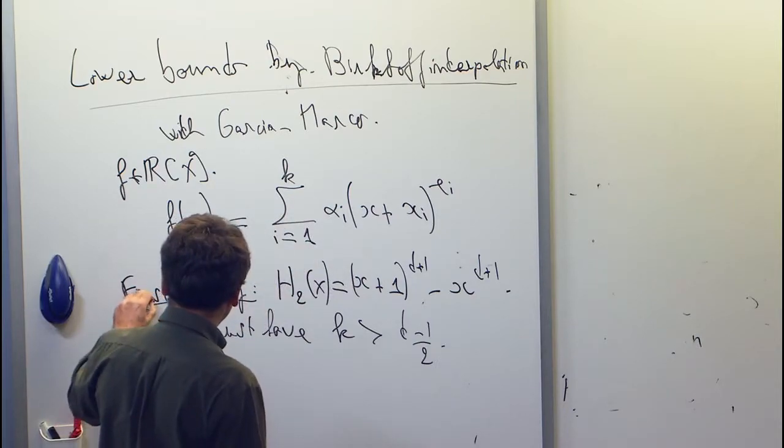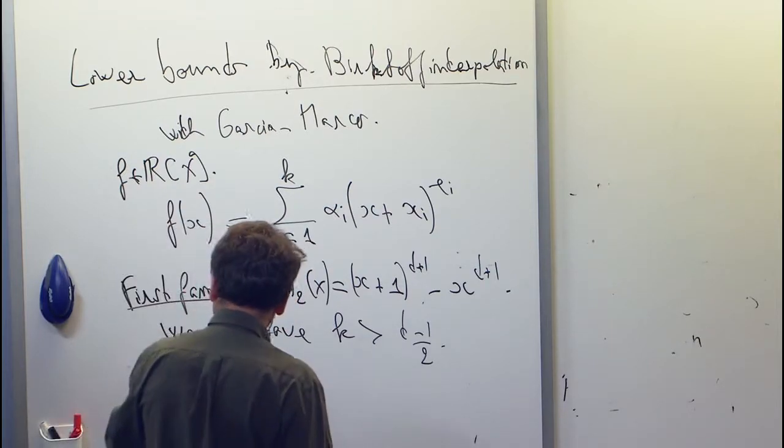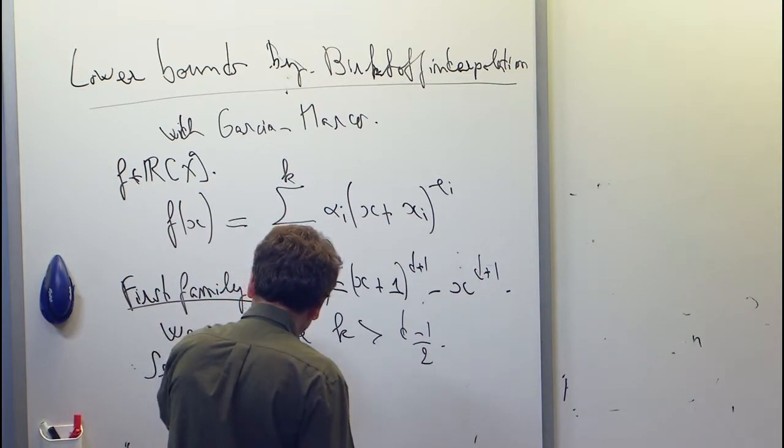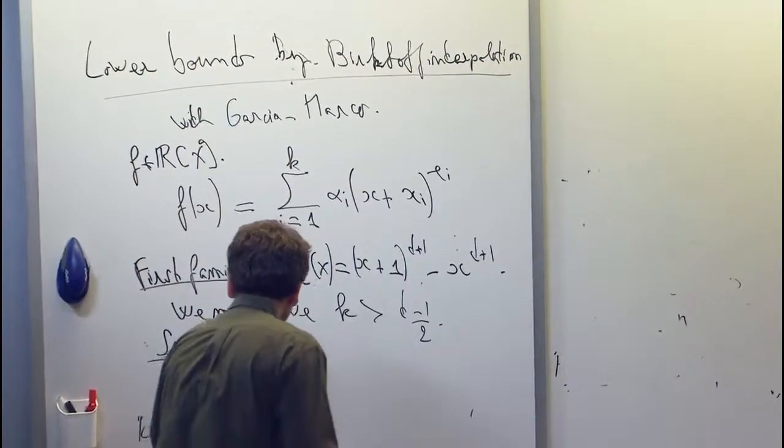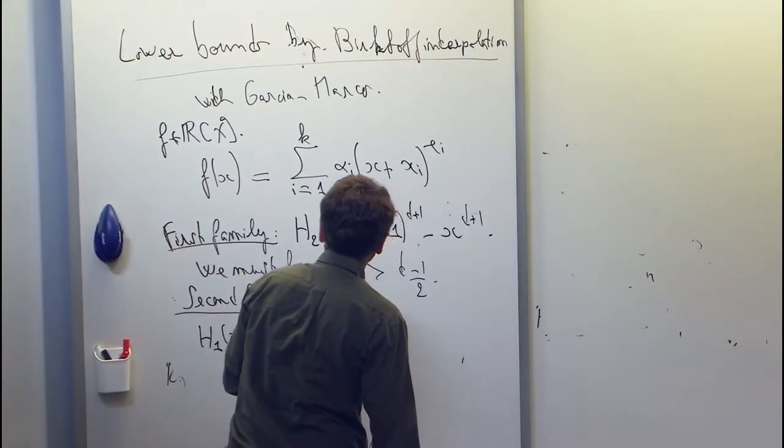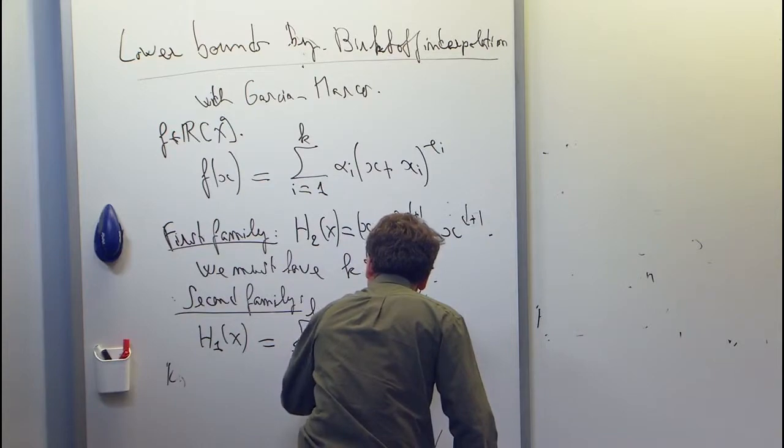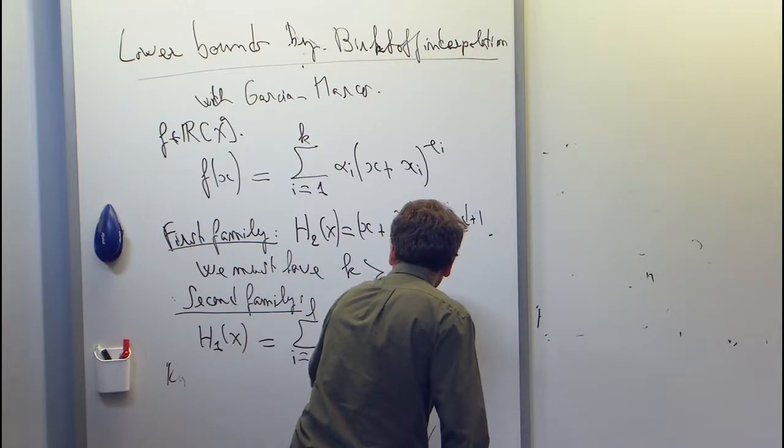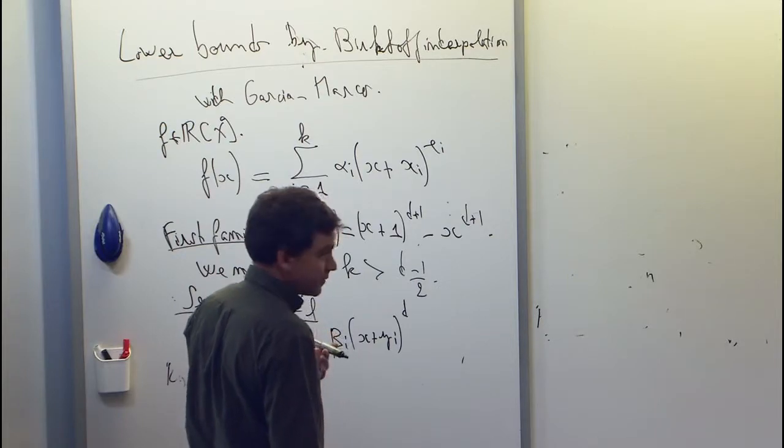And so you could ask, what if we allow arbitrary exponents? We have another example. You take this family, any linear combinations of powers, double power d, like x plus yi, so this is like a shift.